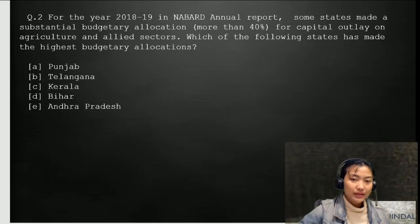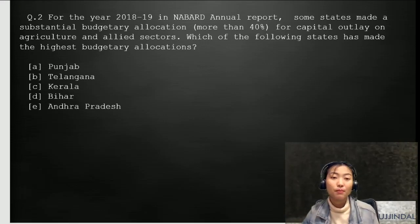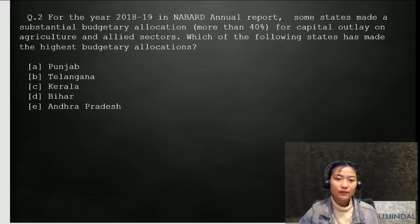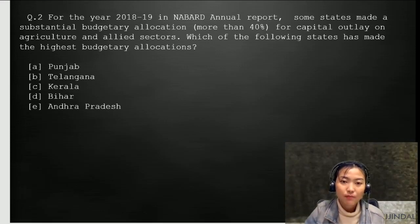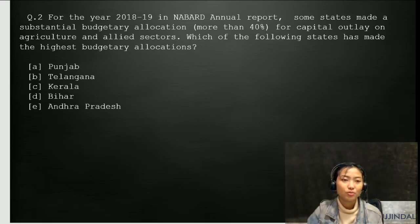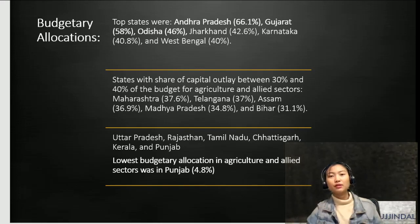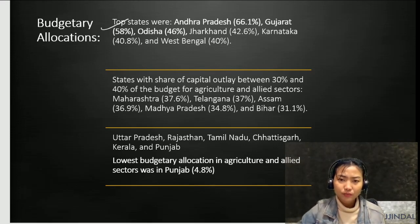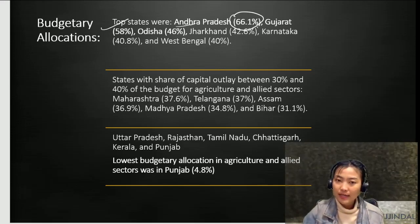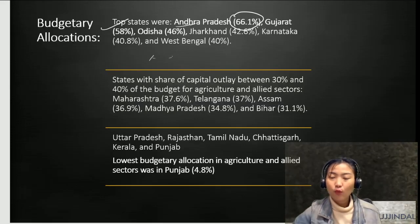Question number two: as per the NABARD annual report 2018-2019, some states made substantial budgetary allocations of more than 40% for capital outlay on agriculture and allied sectors. Which of these states made the highest budgetary allocations? The options are A: Punjab, B: Telangana, C: Kerala, D: Bihar, E: Andhra Pradesh. The top states in budgetary allocations were Andhra Pradesh with 66.1%, followed by Gujarat with 58%, Orissa 46%, Jharkhand, Karnataka, and West Bengal — all above 40%.